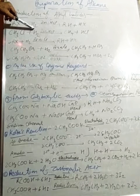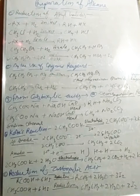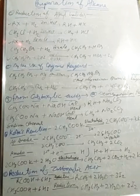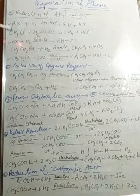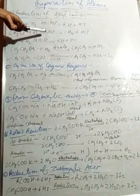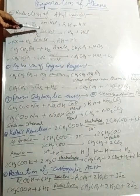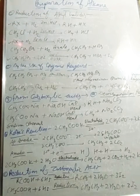RX plus H₂, catalyzed by zinc and hydrochloric acid, will form RH plus HX. RH means alkane and HX means hydrohalide. For example, CH₃I plus H₂, catalyzed by zinc and HCl, forms methane and HCl.